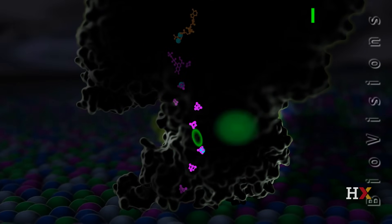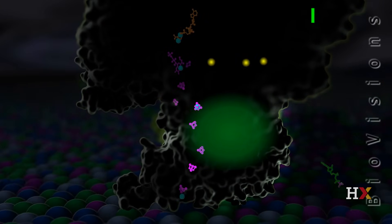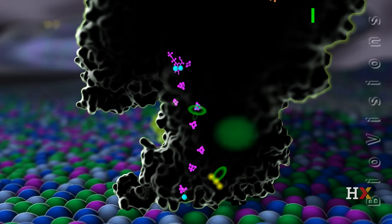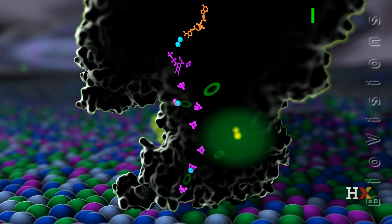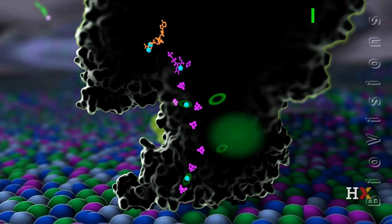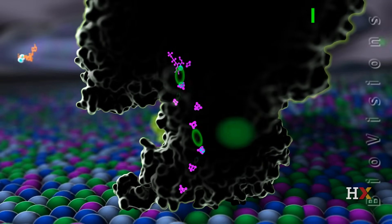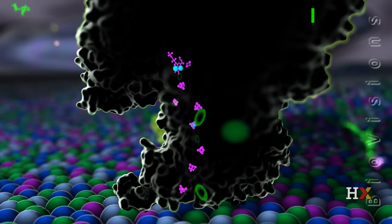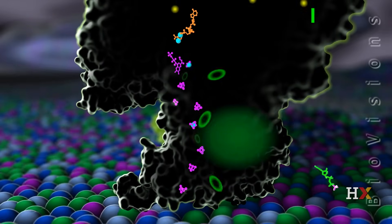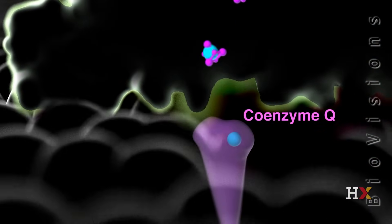A small amount of energy is released each time an electron is passed between redox centers. Complex one harnesses this energy across all the redox centers and uses it to pump protons. The last redox center in complex one donates two electrons to a coenzyme Q molecule.